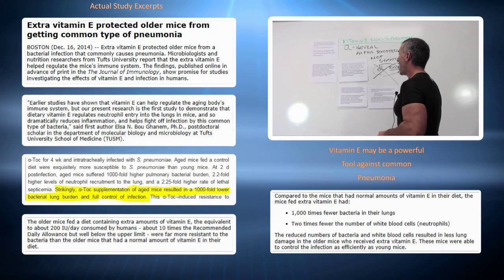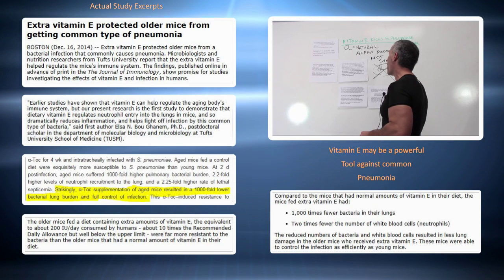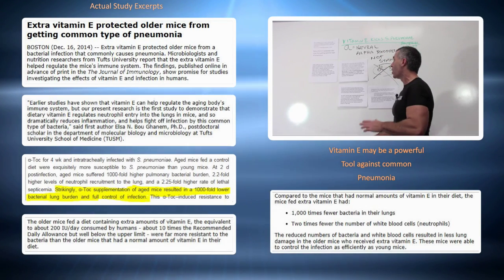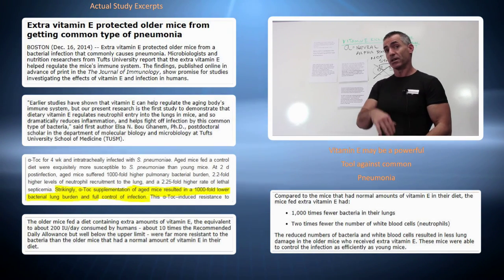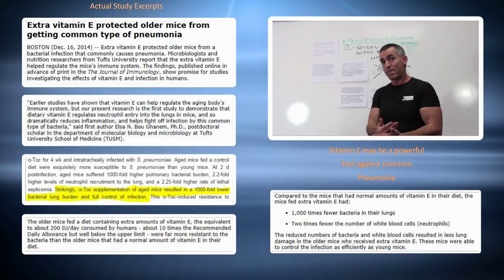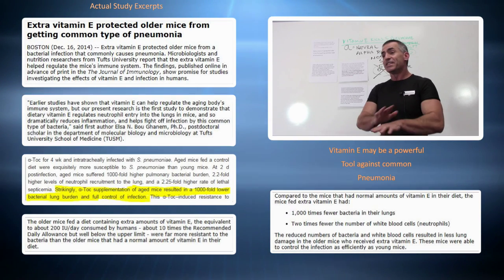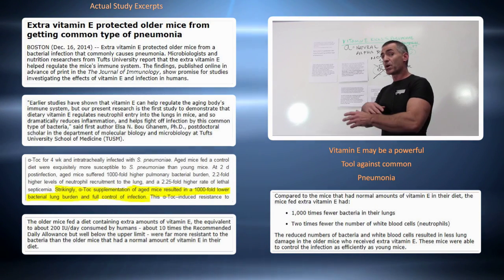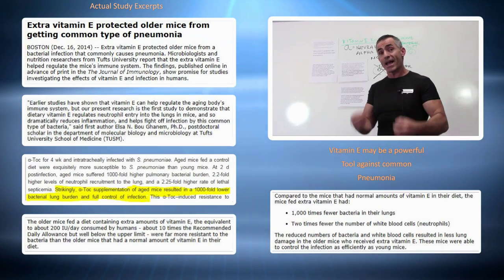Strikingly, alpha-tocopherol supplementation of aged mice resulted in a 1,000-fold lower bacterial lung burden and full control of infection. That's repeated: 1,000-fold lower bacterial burden and full control of infection. That's just vitamin E. That's not some weird drug or pharmaceutical. That's just simple dietary natural vitamin E.